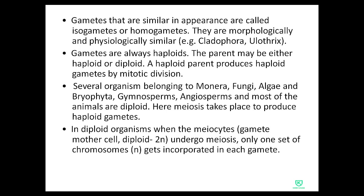In diploid organisms, meiosis takes place to produce haploid gametes. The gamete mother cell, which is diploid (2N), undergoes meiosis so that only one set of chromosomes gets incorporated in each gamete, making each gamete haploid (n).